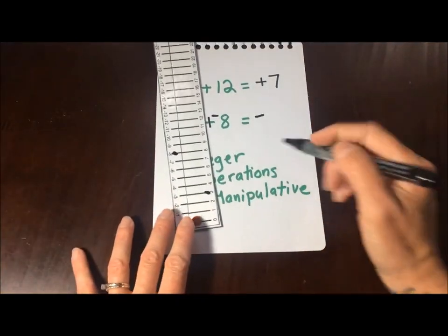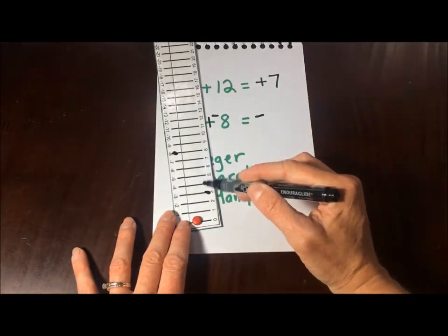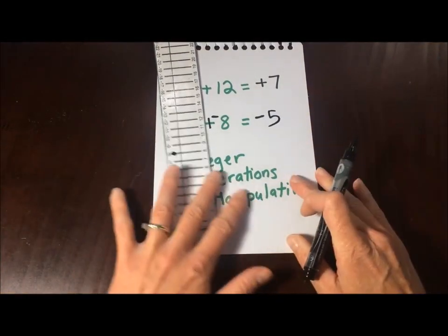Fold it up. Count the spaces. 1, 2, 3, 4, 5. So our answer is negative 5.